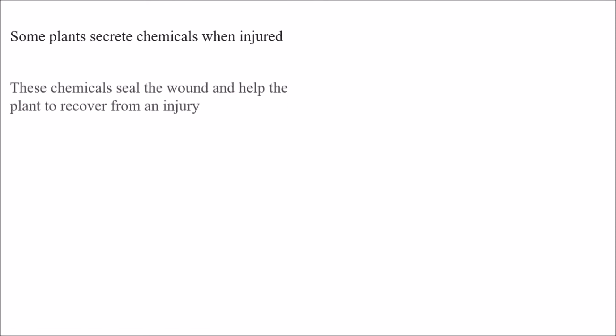Some plants secrete chemicals when injured. Similar to how a clotting mechanism works in organisms, plants also have such a mechanism. These chemicals seal the wound and help the plant recover from injury — the chemicals produced by plants after injury help seal the wound, just as a clot would.